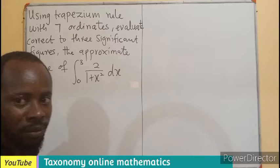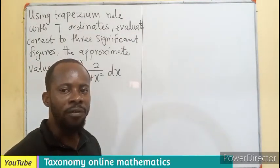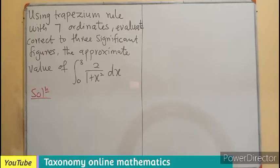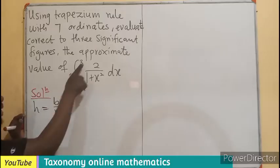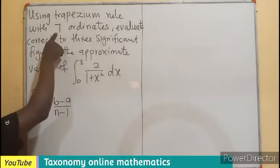Now we can do this if we draw a table. To draw a table we need to know the height of the trapezium. So first of all let's determine the height. We know the height is determined by h equals b minus a divided by n minus 1.